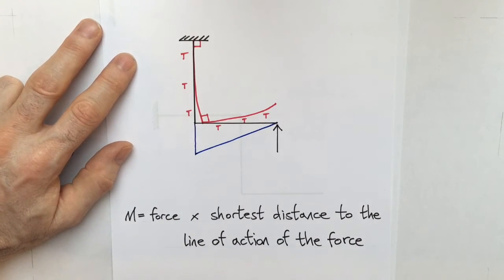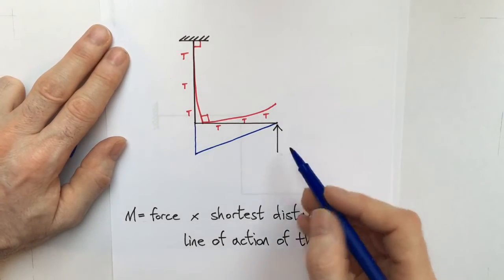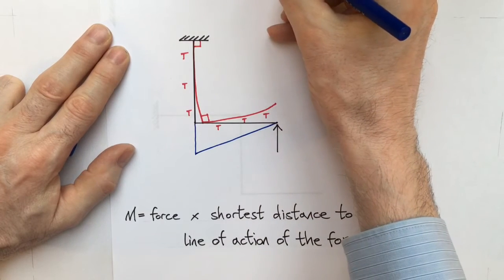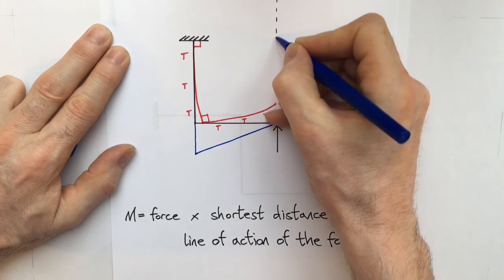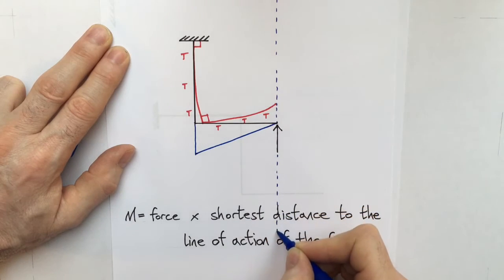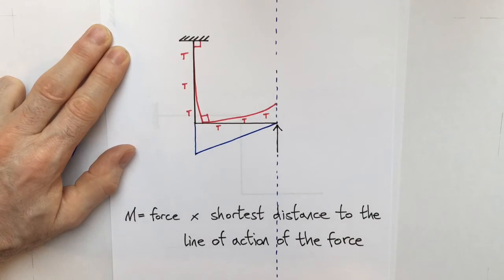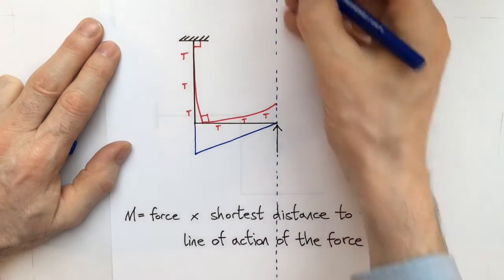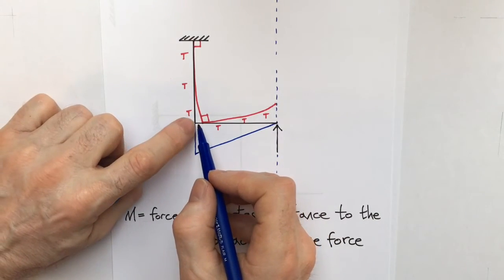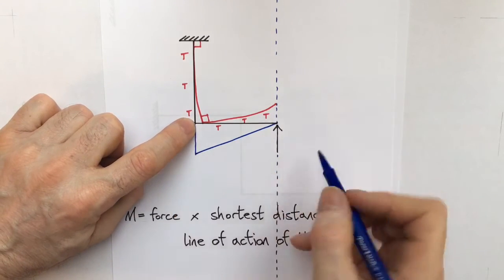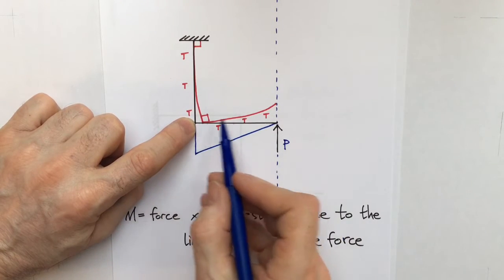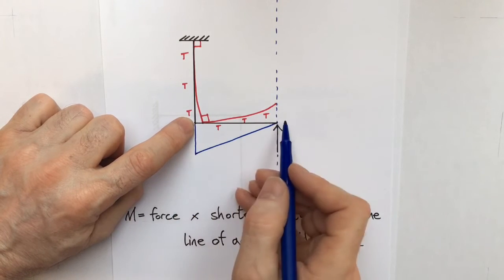Now, where is the line of action of this force? Well, this force has a line of action which starts at the far end of the universe and it goes right through the force, and it carries on right to the opposite end of the universe. Well, out of shot at least. So this is the line of action of the force. So if I want to find out what the bending moment is at this point, I multiply the force P times the distance, the shortest distance to the line of action of the force, which is three. So it's going to be three P.